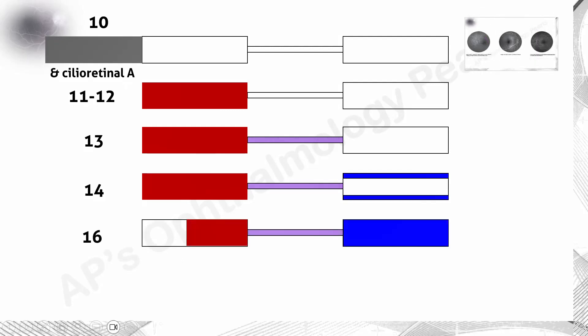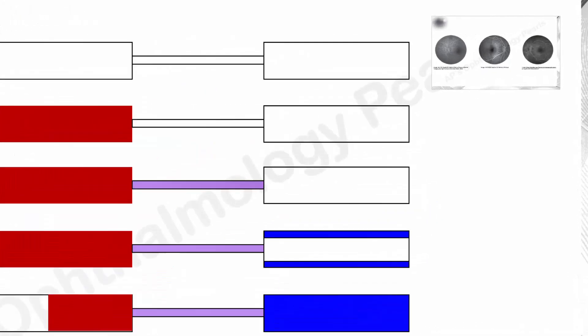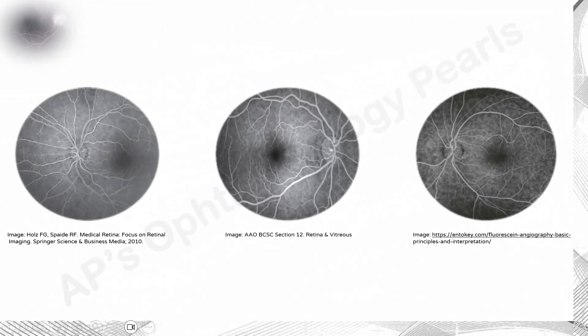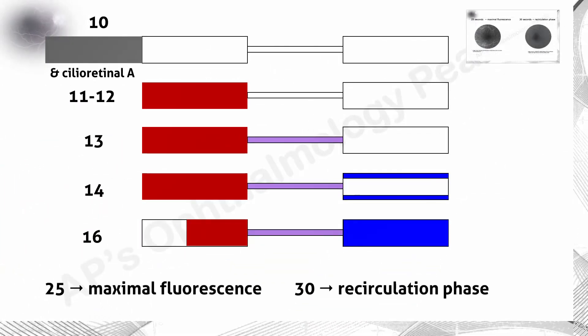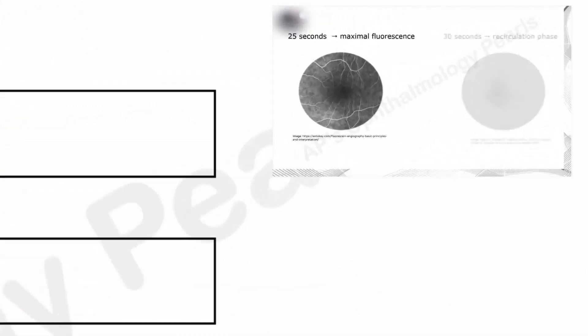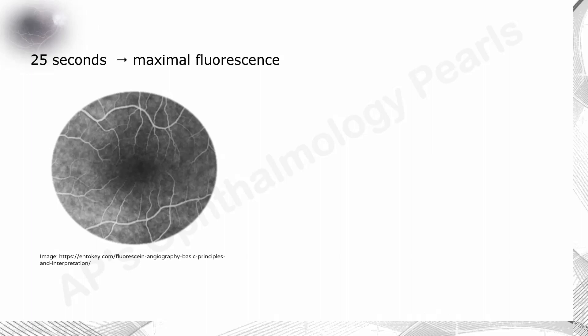During the venous phase, at roughly 16 seconds following dye injection, dye fills the entire lumen of the venules. Maximal fluorescence is observed approximately 25 seconds following injection, at which time the fine perifoveal capillaries can be best imaged. This is called the peak phase of the fluorescent angiogram.